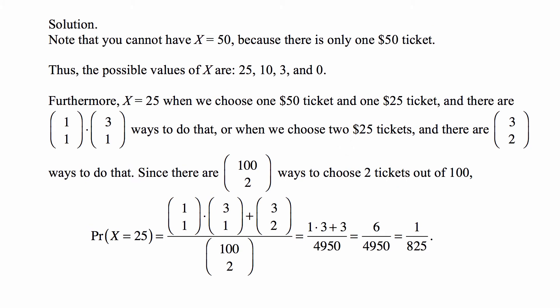So let's see what kind of values does this random variable have. First, let us note that you cannot have X equal to 50, because there's only one $50 ticket, and you're looking at the smaller of the two tickets. So the possible values are 25, 10, 3, and 0. This approach of listing possible values, and then we're going to figure out their probabilities.